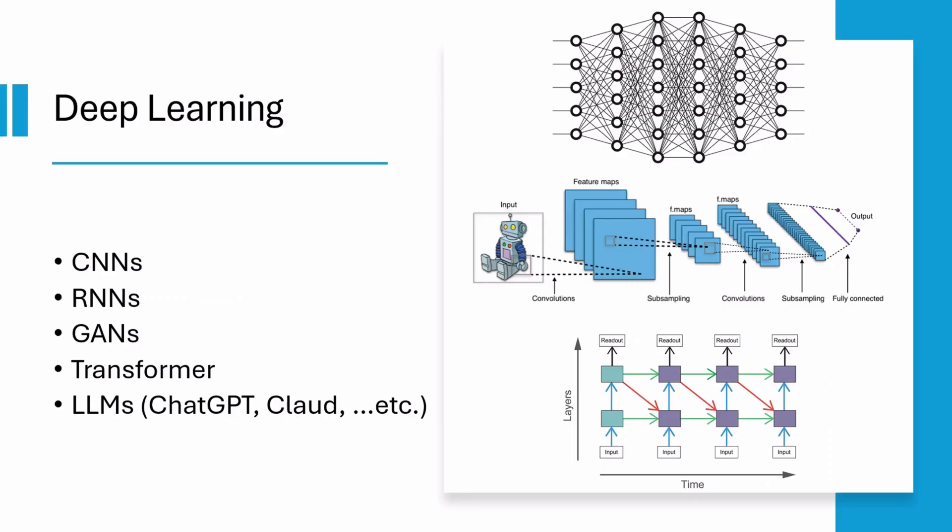In contrast, deep learning, a subset of machine learning, minimizes the need for human-guided feature selection by automating this process. If machine learning is like teaching a child to recognize simple fruits, deep learning is like teaching them to recognize every ingredient in a complex dish just by looking at it. Unlike traditional methods that require explicit feature selection, deep learning algorithms utilize artificial neural networks to learn directly from raw data.